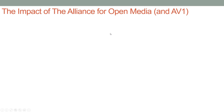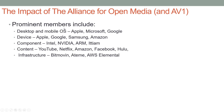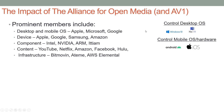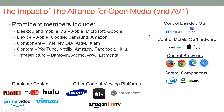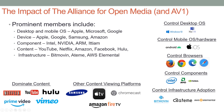Now let's look at the impact of the Alliance for Open Media and AV1. Prominent members include Apple, Microsoft, and Google — big in desktop and mobile OSes, device manufacturers, component vendors, content publishers, and infrastructure vendors. AV1 controls desktop software, mobile OS hardware and software, and the browsers. They control many of the components, dominate content, and dominate other viewing platforms including Samsung, Apple, Amazon, and Google — very big in the OTT market. Infrastructure providers can also adopt or block a codec and allow or prevent its distribution.